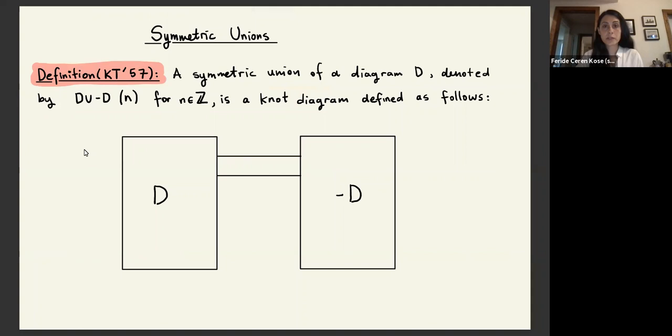For a given diagram D, we consider the connected sum of D and its mirror in a way that the resulting diagram admits an axis of mirror symmetry. And we are also allowed to insert crossings along the axis. And the resulting diagram is called the symmetric union of D.